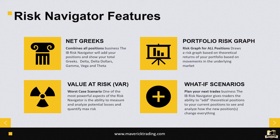It also gives you a portfolio risk graph, which everyone jumps into first. It takes all your positions, mashes them into one, and says: this is how your portfolio should move if the S&P 500 goes up two percent, this is what should happen if it goes down two percent. You can see the theoretical returns and how your overall risk graph looks.